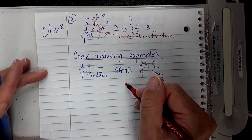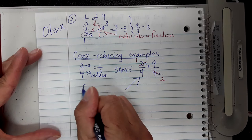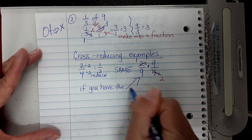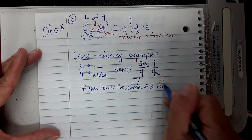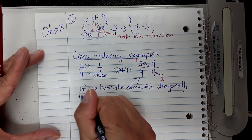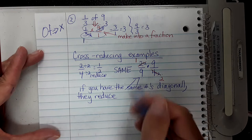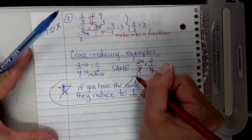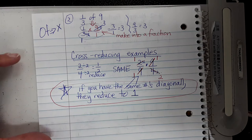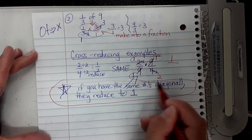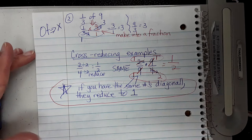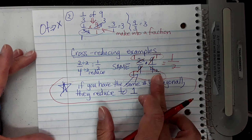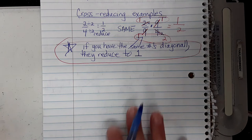And remember: if you have the same numbers diagonally, they reduce to ones because you divide by the number itself. Here I have two nines diagonally — divide each by 9 and both become 1. So now the problem is just 1 times 1 over 1 times 2. The answer is 1 half. Did you know that 2 over 9 times 9 over 4 equals one half? That's why cross-reducing helps — without it you'd have 18 over 36 to reduce.